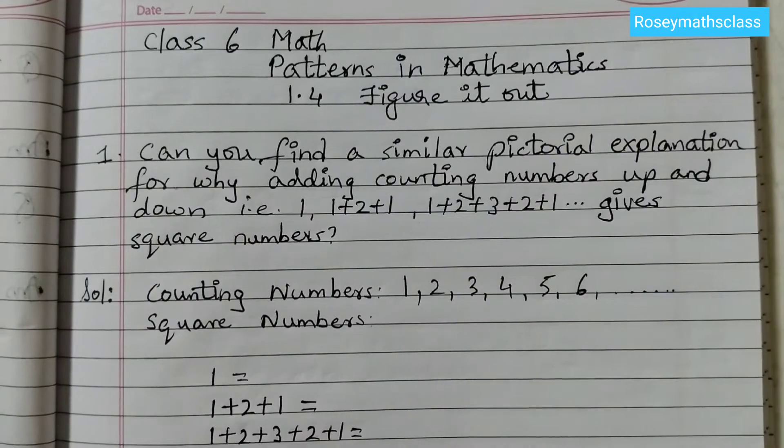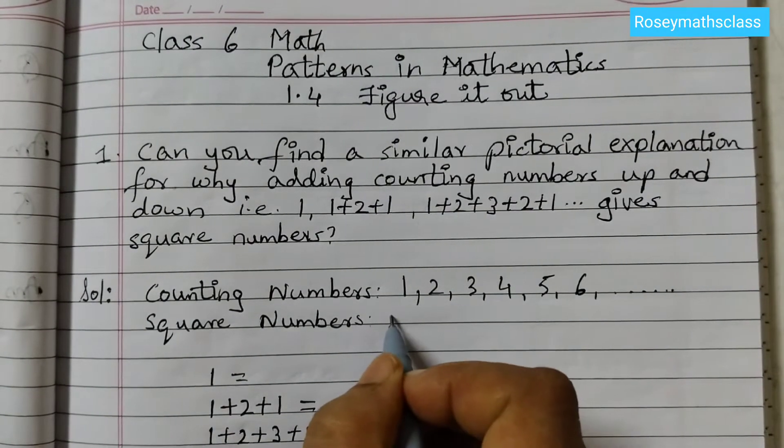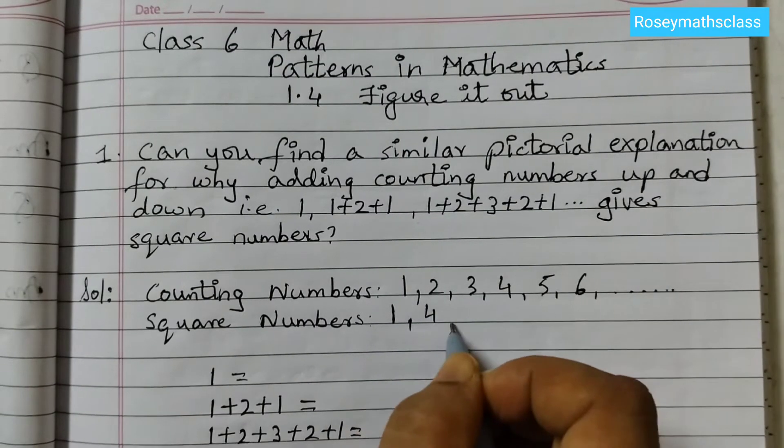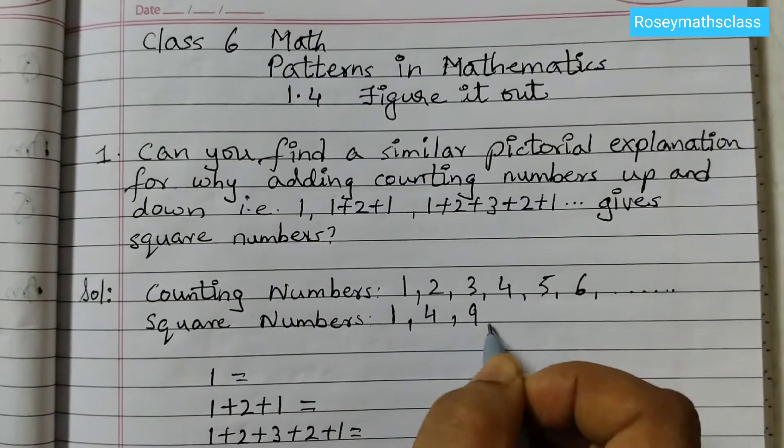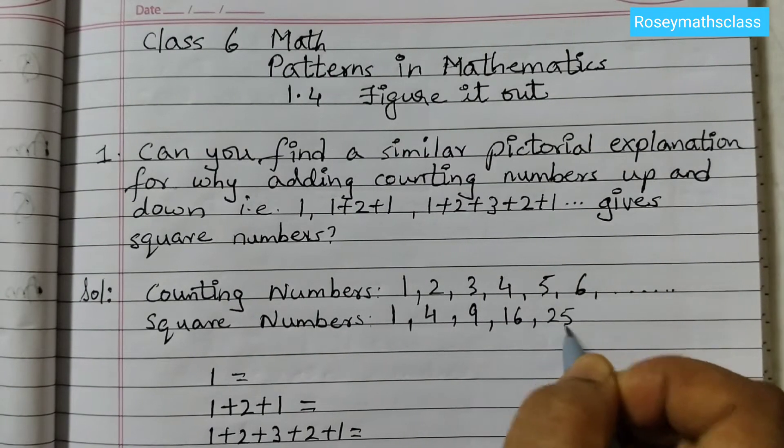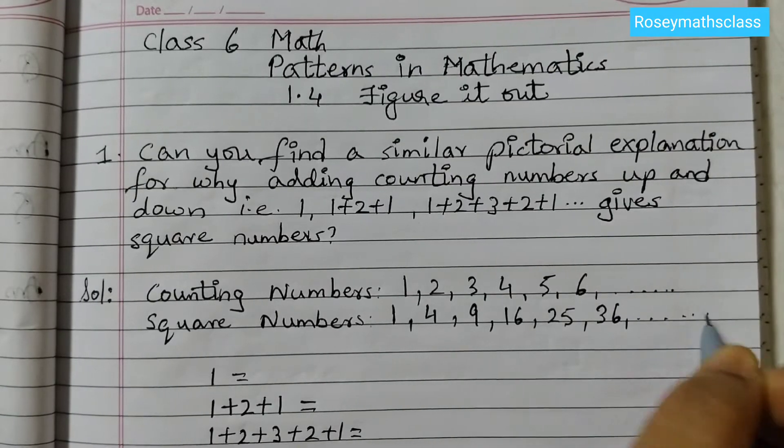Square numbers are like 1 squared is 1, 2 squared that is 4, 3 squared is 9, 4 squared is 16, 5 squared is 25, 6 squared is 36. So these are the square numbers.